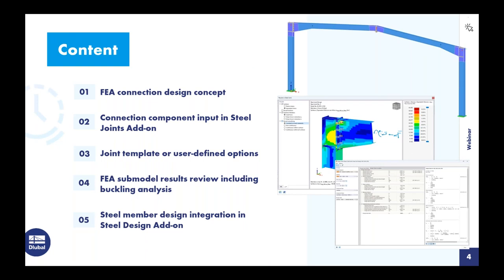As far as the content over the next hour, I want to give a brief introduction into finite element analysis connection design and the overall concept — it's a little different than some other connection design software. We'll then move on to our example with a simple steel frame and discuss the connection component input utilizing the steel joints add-on within RFEM. We'll also cover joint template options, user-defined connections, results including the FEA sub-model and buckling analysis, and finally the ability to integrate with the full member design using the steel design add-on.